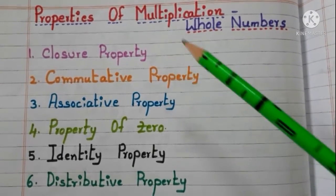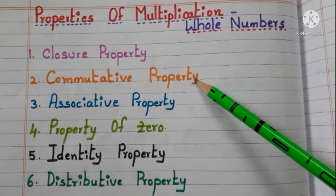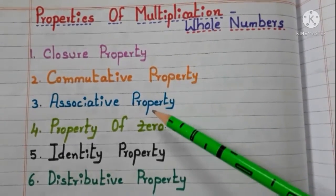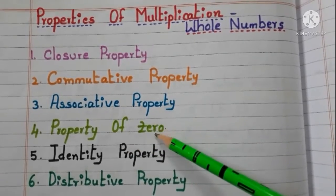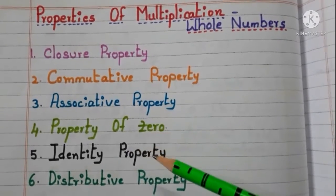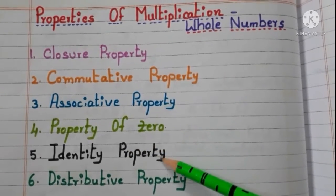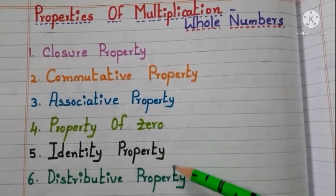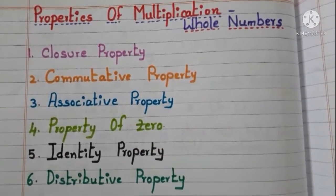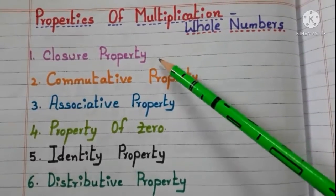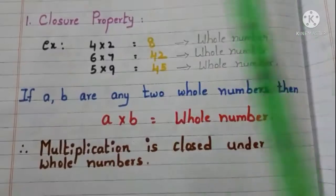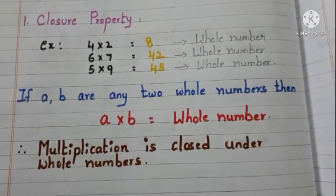Closure property, commutative property, associative property, property of 0, identity property and distributive property. First, we go with closure property.